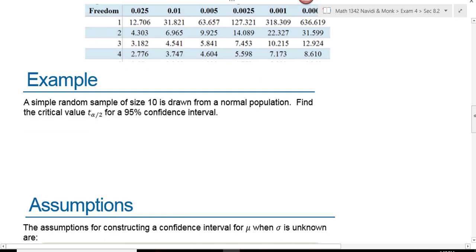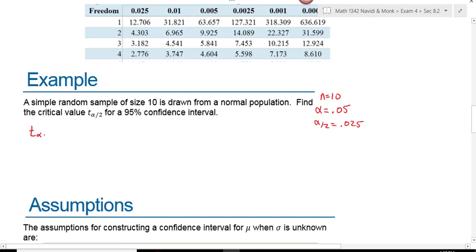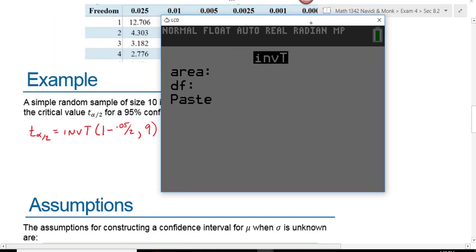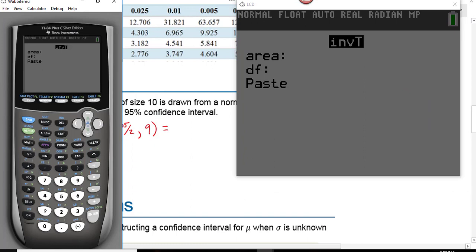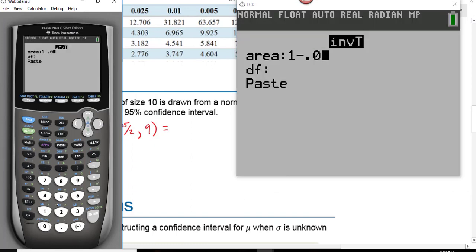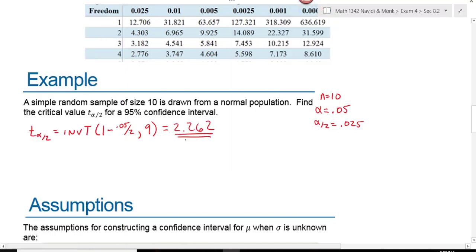On this first example, a simple random sample of size 10 is drawn from a normal population. Find the critical value for a 95% confidence interval. For a 95% CI, alpha equals 0.05, so alpha over 2 equals 0.025. Using inverse t on the calculator with area 1 minus 0.05 divided by 2 and degrees of freedom of 9 (since n equals 10), we get a critical value of 2.262.